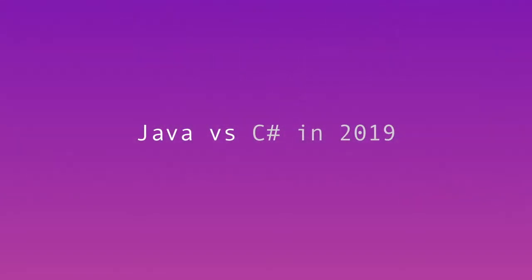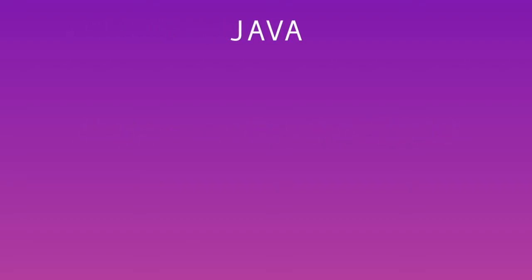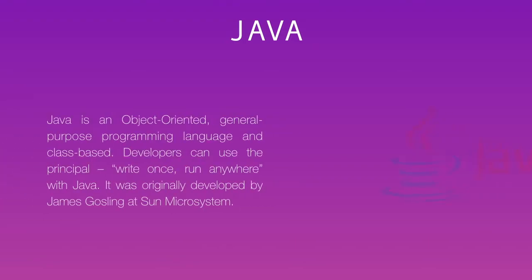Hello guys, welcome to DotNet Training Academy. In this video we are going to talk about Java versus C# in 2019, so let's get into it. Firstly, we talk about Java — we all know Java is an object-oriented language.